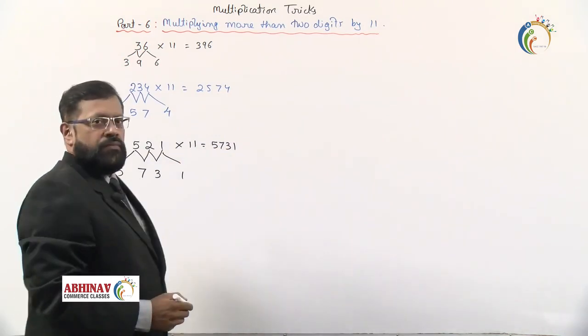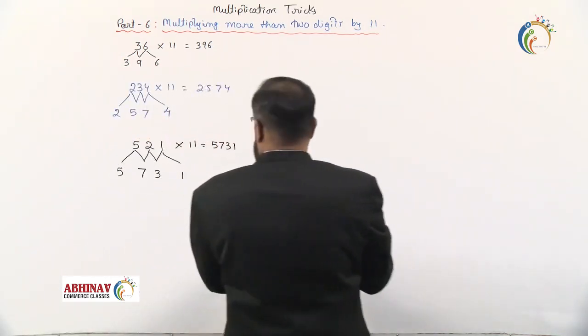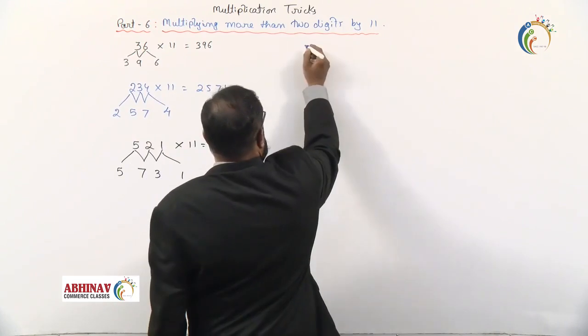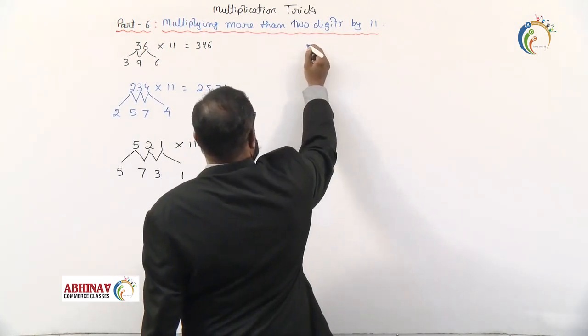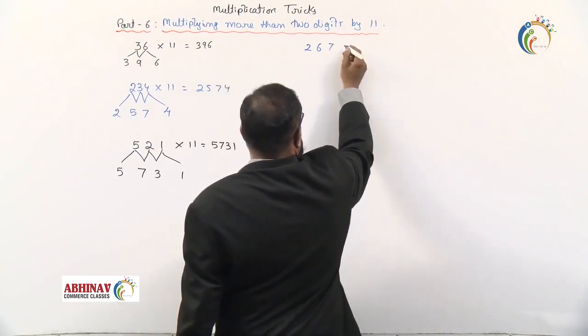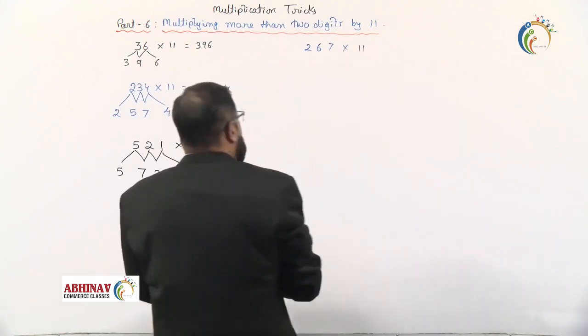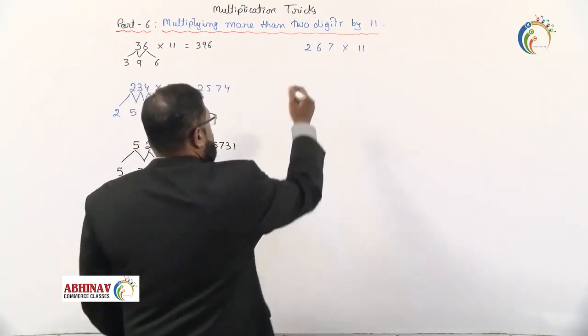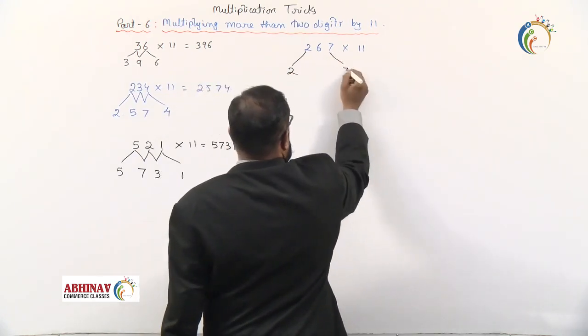Now let's see examples where you have to carry forward the numbers. Suppose it is 267 multiplied by 11. Let's see how to get it. First, we take 2 here, we take 7 here.